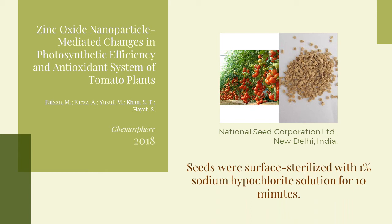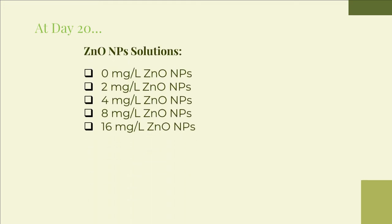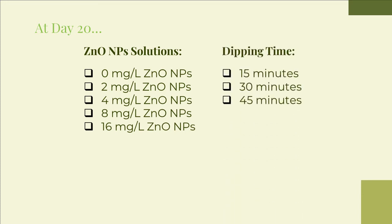Healthy-looking seeds with uniform size were surface sterilized with 1% sodium hypochlorite solution for 10 minutes, followed by repeated washing with double-distilled water. At the 20-day stage of growth, roots of tomato plants were dipped into 0, 2, 4, 8, and 16 milligrams per liter of zinc oxide nanoparticles for 15, 30, and 45 minutes.